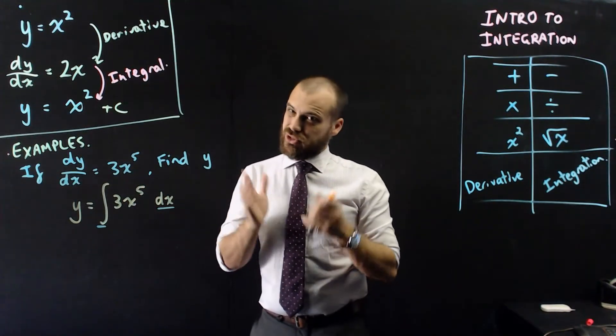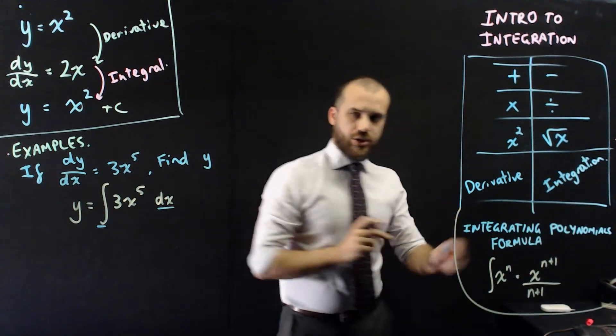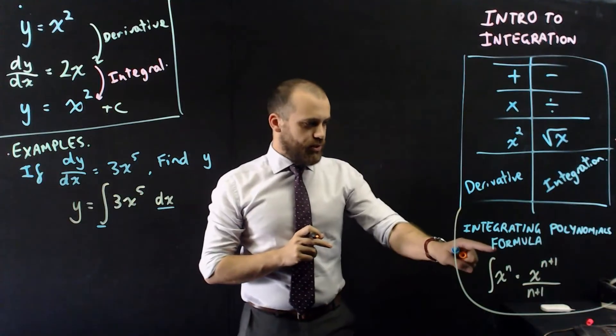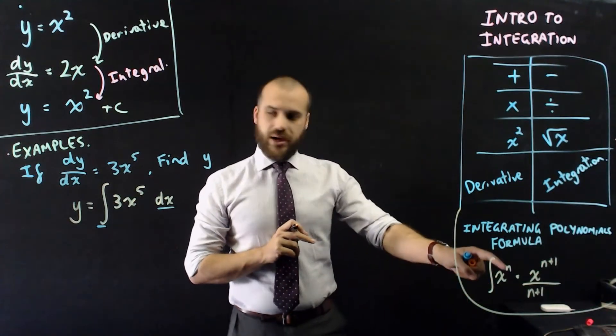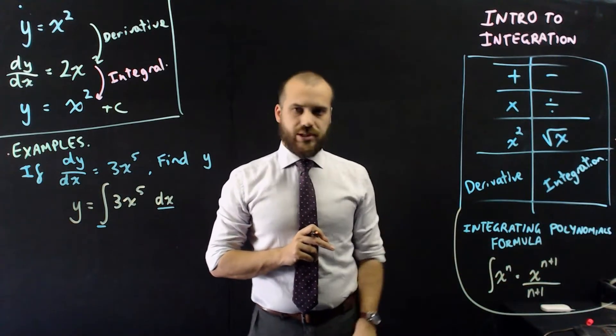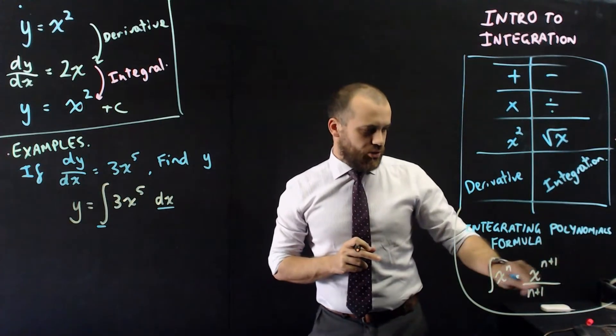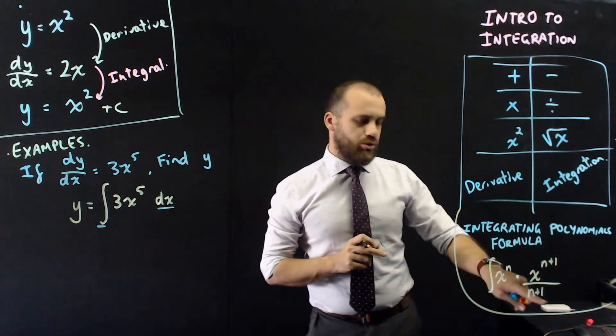Now, let's integrate it, but to do that, we're going to need a formula. So, here's a handy formula. Integrating polynomials formula, the integral of x to the power of n is equal to x to the n plus 1 over n plus 1. So, what does that say? It says increase the power by 1 and then divide it by whatever that new power is.